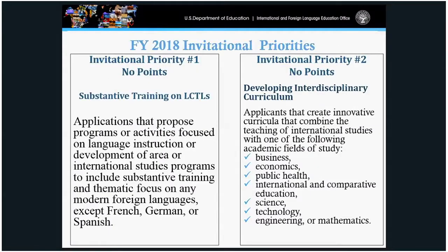Under invitational priorities, UISFL has two. Please note there are no points given nor penalized if you choose to address them. Invitational priority number one is substantive training in less commonly taught languages — applications that propose programs focused on language instruction or development in areas other than French, German, or Spanish.